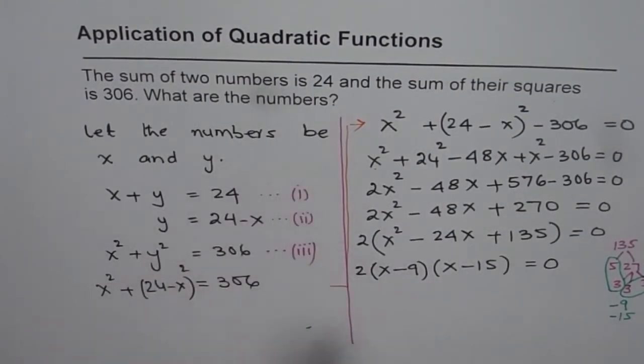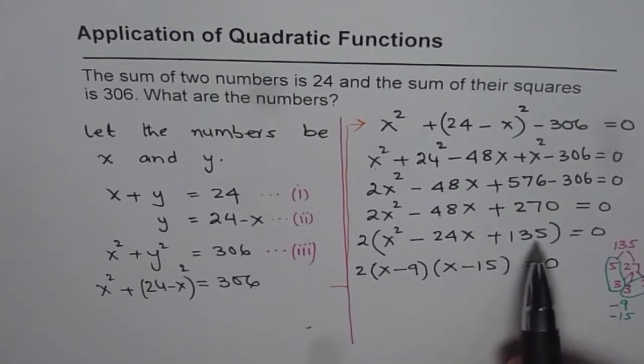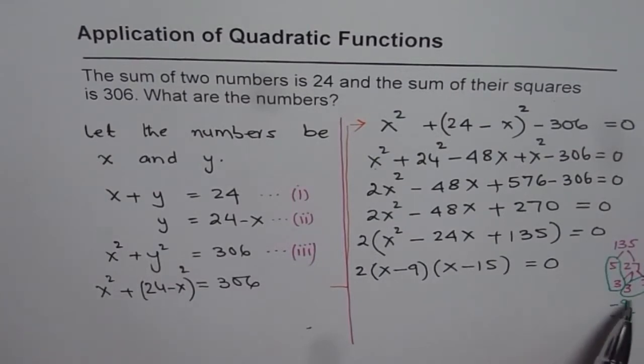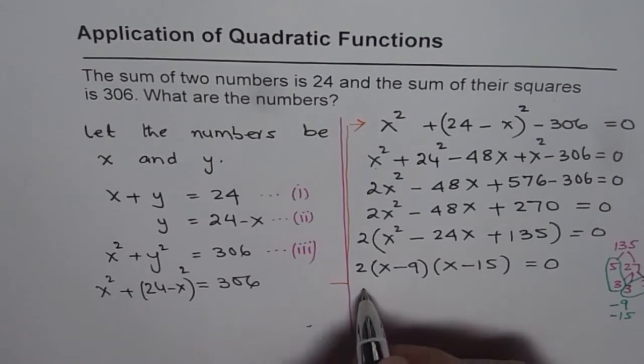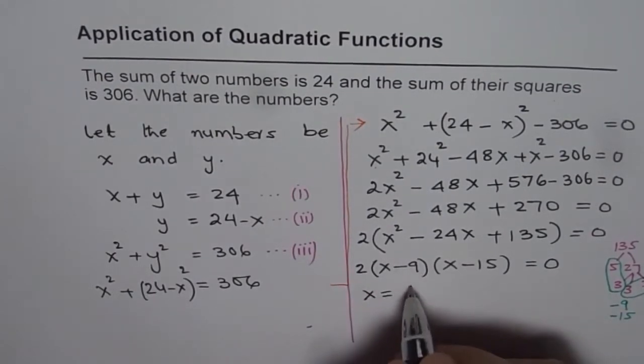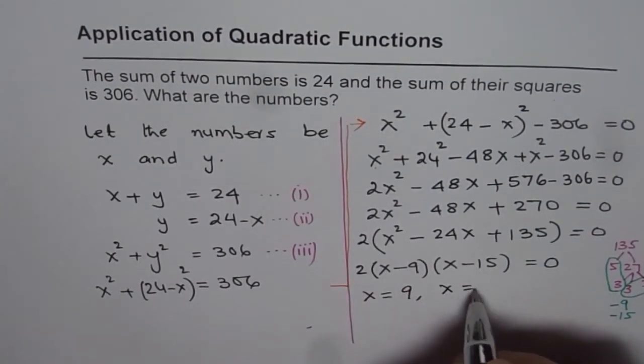So now we can factor and write this as (x minus 9) times (x minus 15) equals 0. When we started with two numbers we are assuming them to be integers, so we knew that there has to be an integer which will satisfy this equation. That gives us two possible solutions: x is equal to either 9 or x is equal to 15.